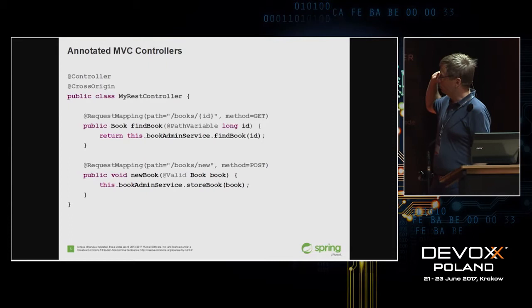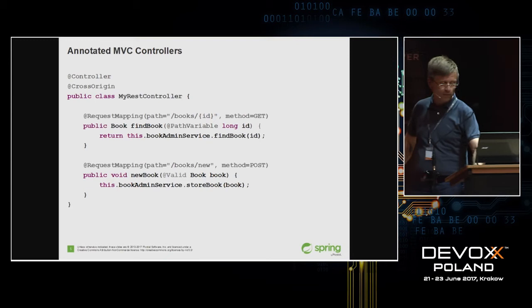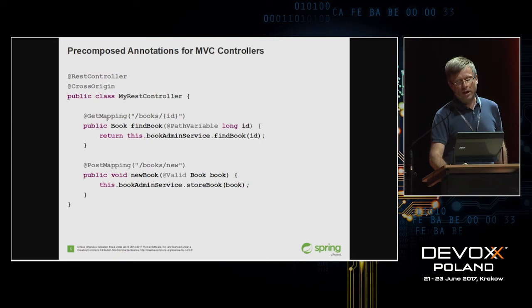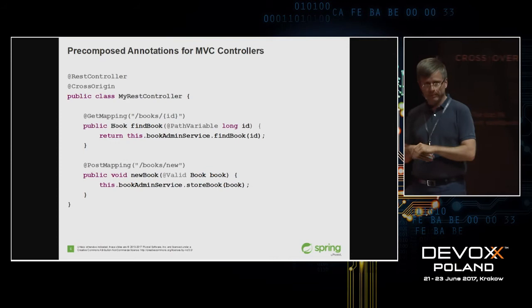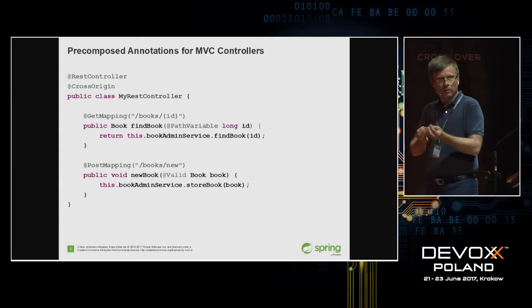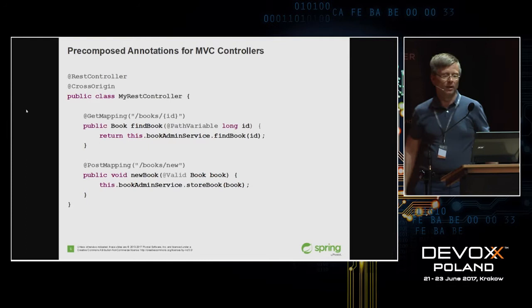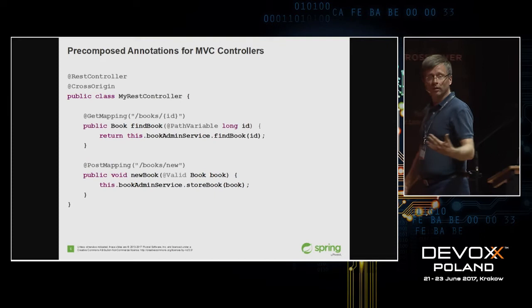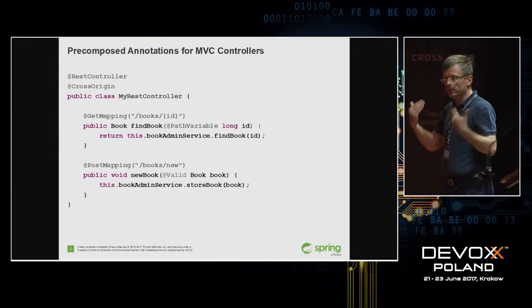Another 4.3 refinement is the ability to define dependency injection constructors on configuration classes. Previously, for technical reasons related to CGLIB subclassing of configuration classes, you couldn't have a freely designed constructor on a configuration class. Now you can, including avoiding @Autowired on a configuration class. Also in 4.3, we introduced pre-composed mapping annotations: @GetMapping, @PostMapping, @PatchMapping, @DeleteMapping, and @PutMapping — using the power of Spring Framework 4's composable annotation model.